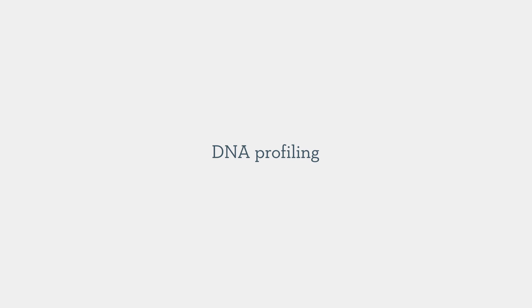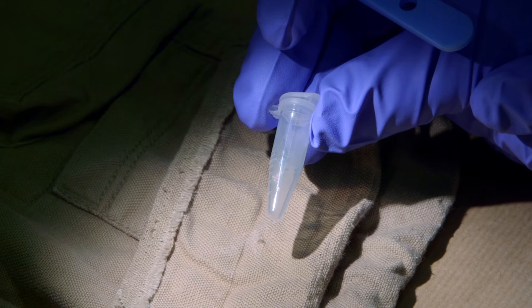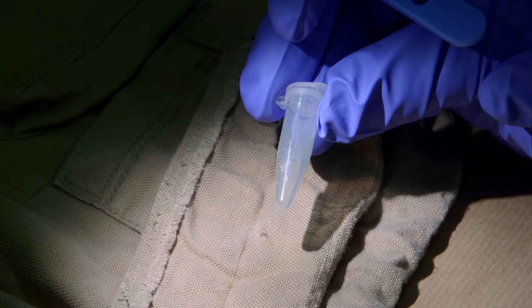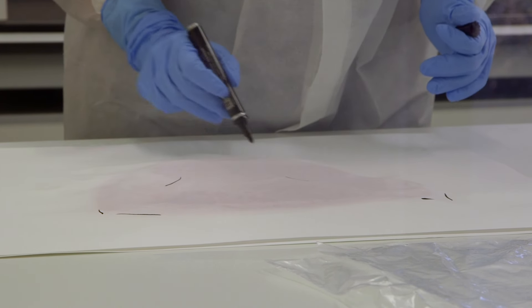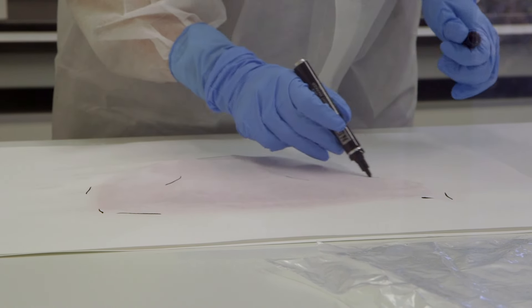Without doubt the most significant advance in forensic science in my career has been the development of DNA profiling — absolutely without doubt. It's transformed the strength of the link between traces left on clothing for example and individual people. The main kinds of samples that you take are the main body fluids: so they would be saliva, semen and blood, but also very much these days skin flakes.